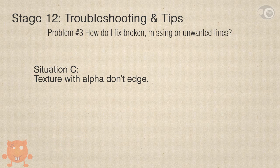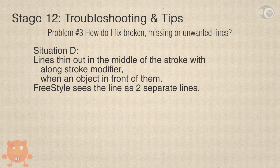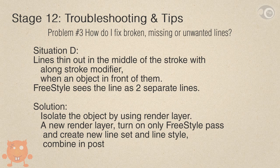Situation C: textures with alphas don't edge. Texture will not edge no matter how nice you make it. The reason is Freestyle is geometry based. To solve this, model your geometry in the shape of the texture. Solution D: lines thin out in the middle of the stroke with the along stroke modifier when there is an object in front of them. This is caused by broken line chaining — Freestyle sees the line as two separate lines. To solve this, isolate the object by using render layers inside a selection group. Create a new render layer, turn on only a Freestyle pass, and create a new line set and new line style. This is very useful if you have something like a clear visor helmet of an astronaut and you want to edge the character inside the helmet.